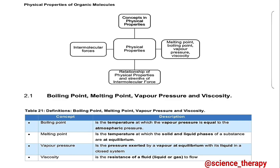Boiling point is the temperature at which the vapor pressure is equal to the atmospheric pressure. Melting point is the temperature at which the solid and liquid phases of a substance are at equilibrium. Vapor pressure is the pressure exerted by vapor at equilibrium with its liquid in a closed system. Viscosity is the resistance of a fluid to flow — the fluid can either be a liquid or gas.